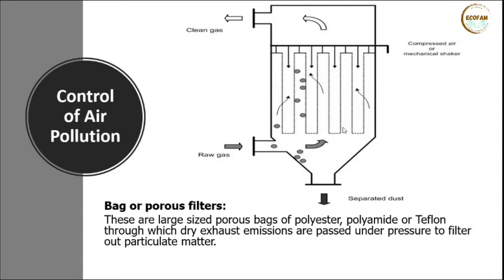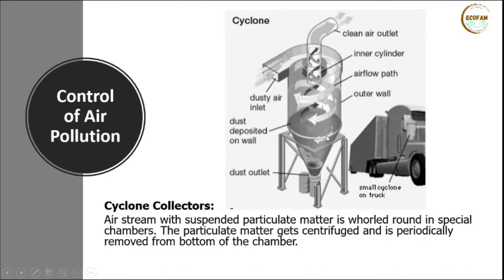Next are bag filters. A bag filter contains a large number of filter bags made of fabric hung upside down in several compartments. When dirty gas containing particulate matter passes through, air passes through the fabric pores but particulate matter cannot pass. After particulate matter settles on the fabric, a shaker dislodges it and it falls down by gravity into a collection point. Fabrics used include polyester, polyamide, or Teflon.